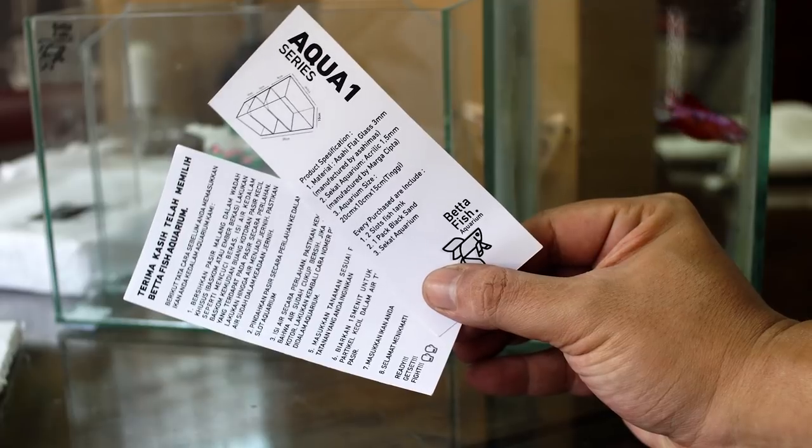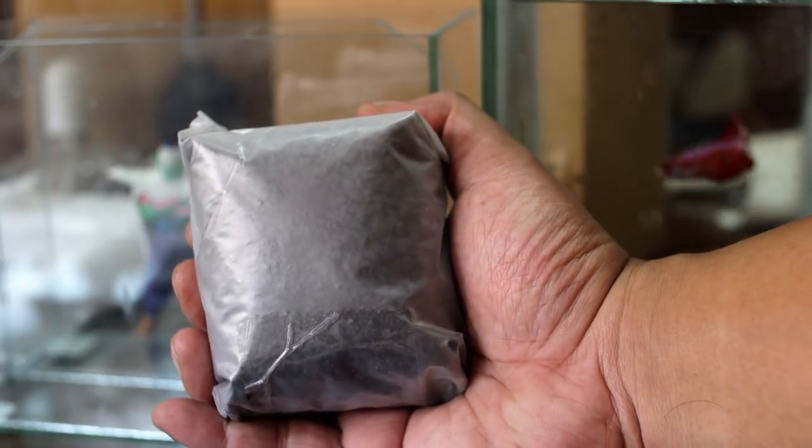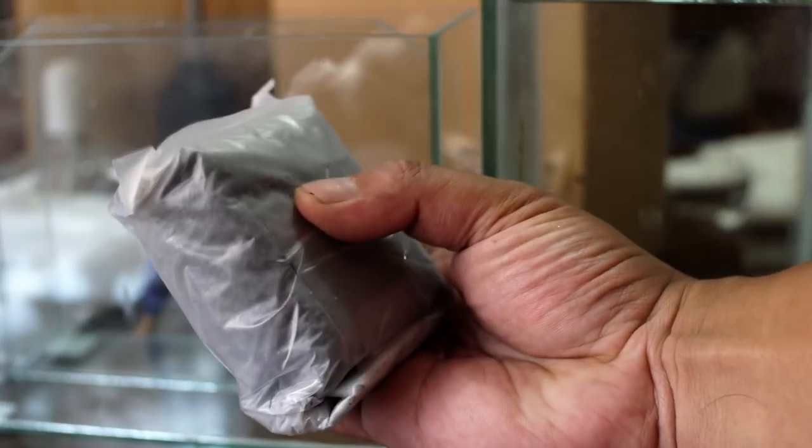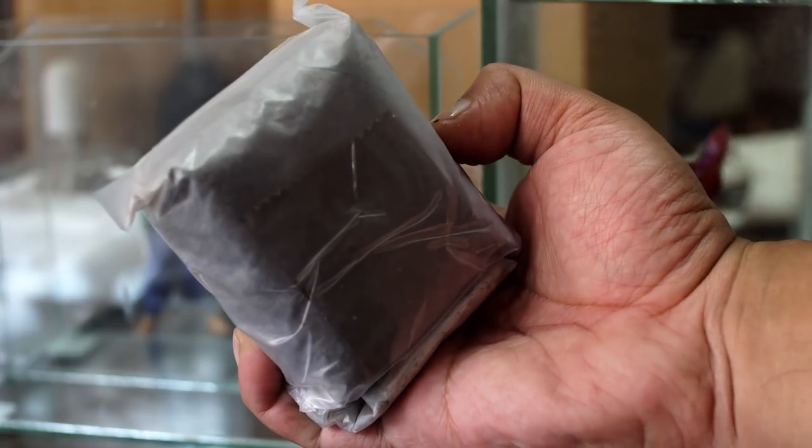Paket penjualan yang kita terima adalah tanda terima kasih ini dan buku panduan, lalu ada pasir malang juga yang gue nggak ngerti untuk apa pasir malang ini disertakan pada aquarium foto ini. Kita kan nggak akan pelihara ikan di sini ya, jadi gue pikir ini nggak usah lah disertakan.